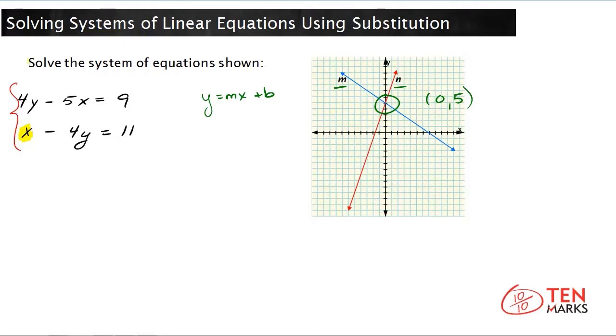So I'm going to solve the second equation for x. I'm going to write it over here. If you have x minus 4y equals 11, to solve for x, you would add 4y to both sides. So add 4y to the left side and add 4y to the right side.